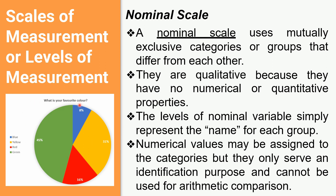As you can see in this pie chart, the question is: what is your favorite color? The categories are different colors such as blue, yellow, red, and green. The values 8%, 31%, 16%, and 45% are numerical values only assigned for identification purposes, but they are not used for comparison. That is the nominal scale or nominal level of measurement.